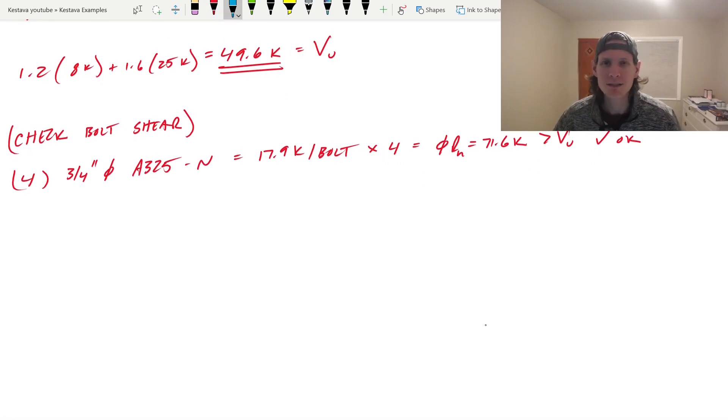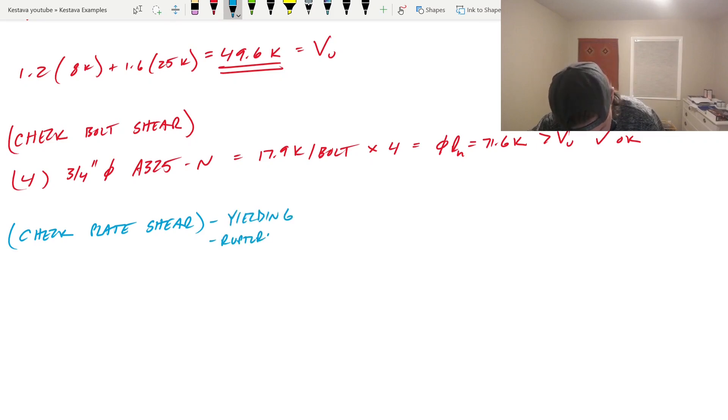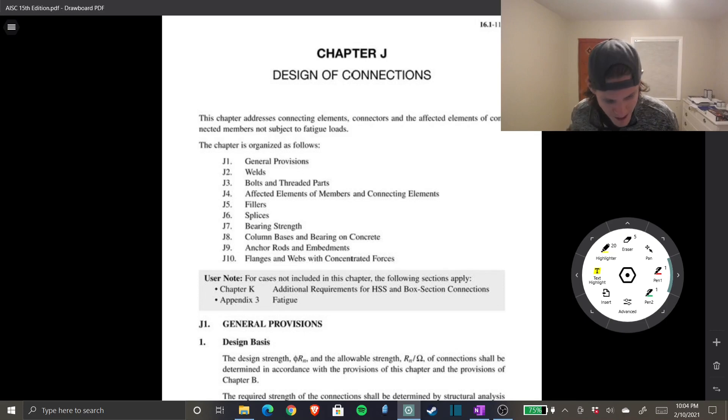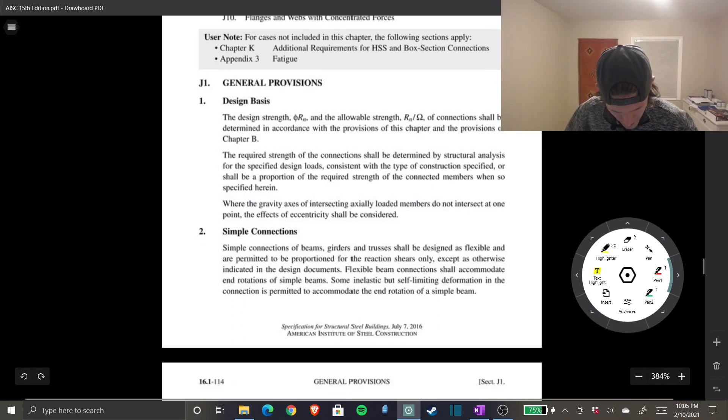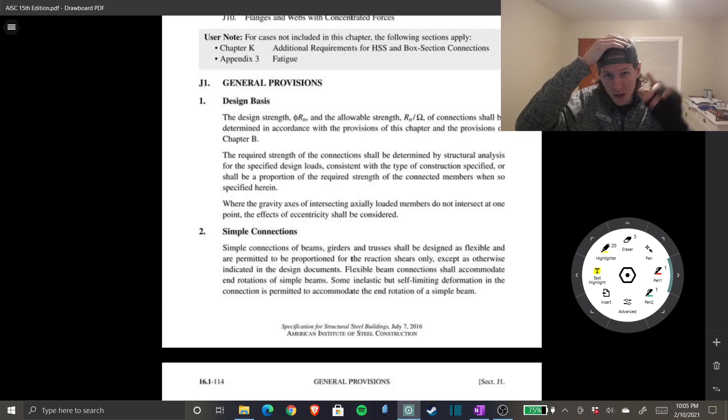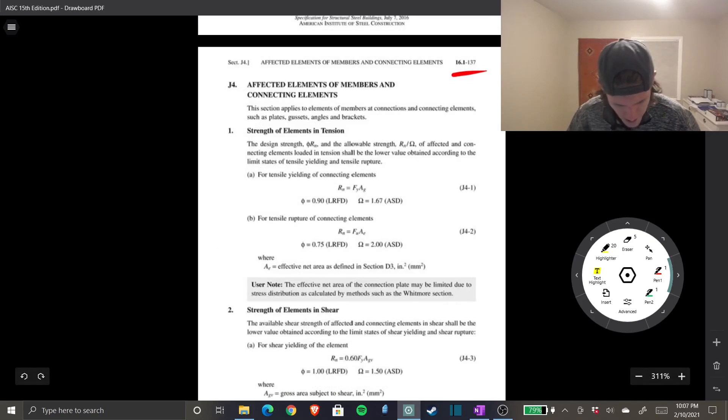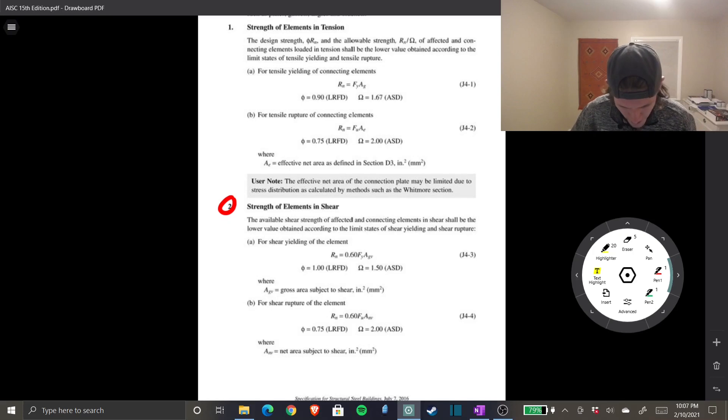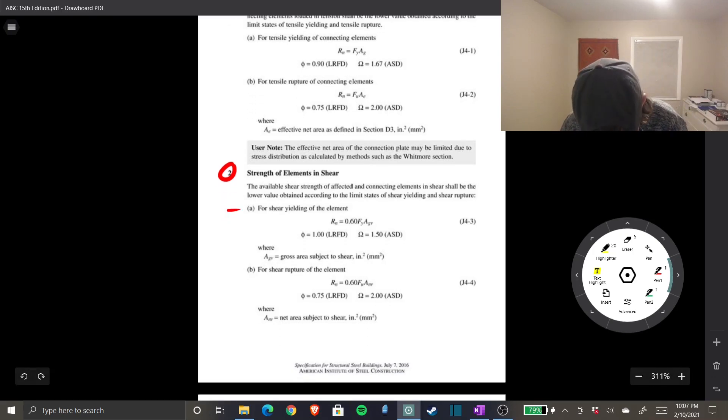Next let's check plate shear and there's two cases: you have yielding and you have rupture. First we're going to do yielding. This leads us right to chapter J in the back, design of connections. We get to page 16.1-137, we scroll down to section J4 section 2, strength of elements in shear. We have our two conditions: A which is yielding and B which is rupture. First, shear yielding.